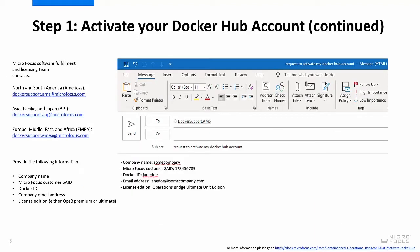Next, you will activate your Docker Hub account with MicroFocus by sending an email to the MicroFocus software fulfillment and licensing team for your region with the following information: company name, MicroFocus customer SAID, Docker ID as created in the previous step, company email address, and license edition — either OpsB Premium or Ultimate.